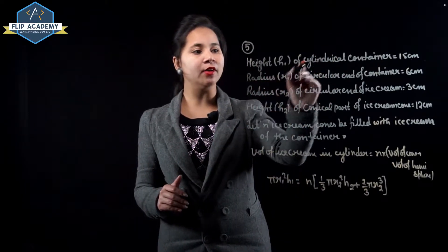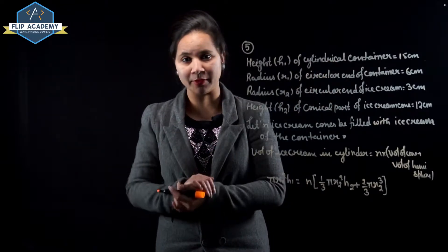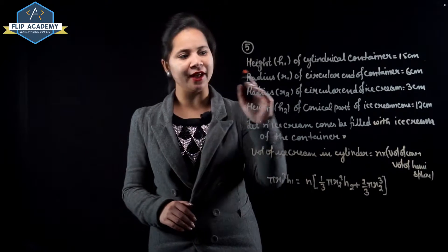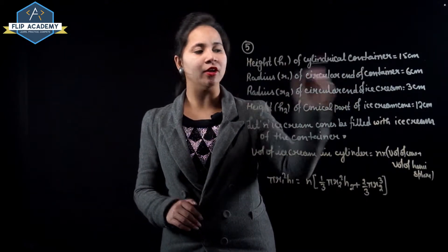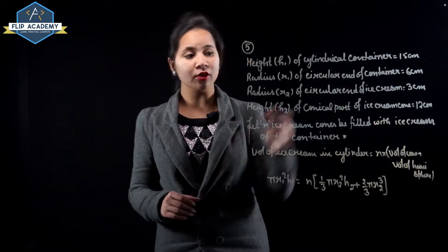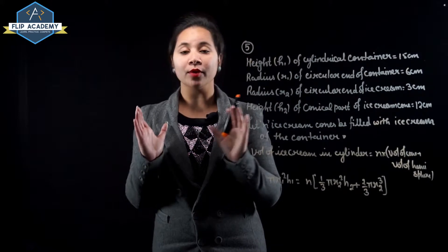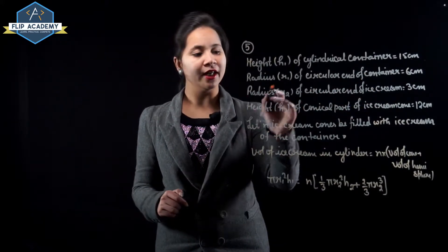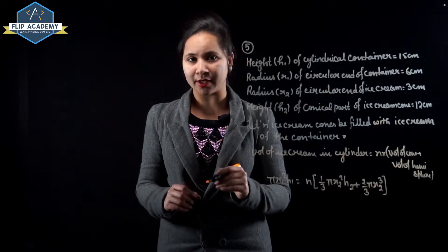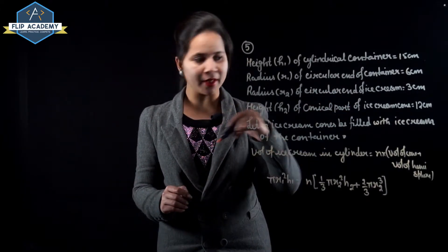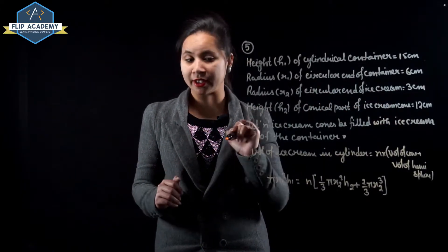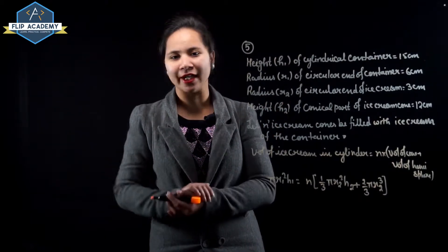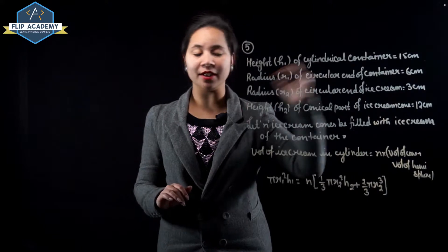Given: height of the cylindrical container h1 = 15 cm, and radius r1 of the circular end of the container = 6 cm. The radius of the circular end of the ice cream cone r2 = 3 cm, and the height of the conical part h2 = 12 cm.